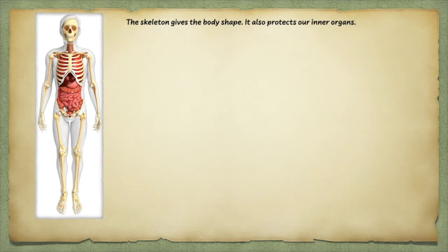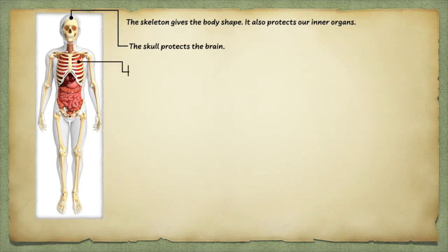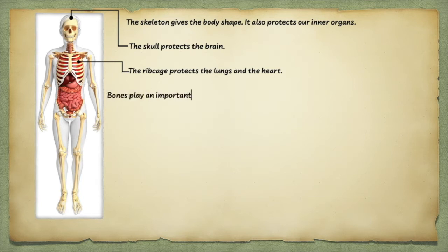The skeleton gives the body shape. It also protects our inner organs. The skull protects the brain. The ribcage protects the lungs and the heart. Bones play an important part in protecting the body against diseases.